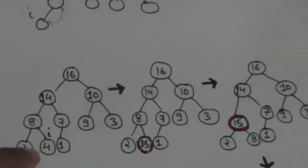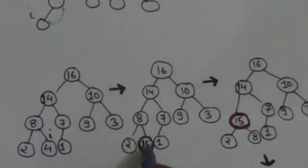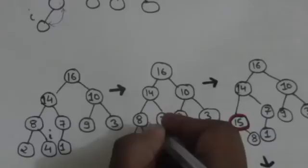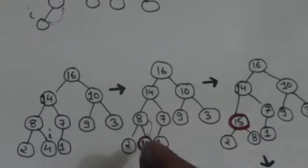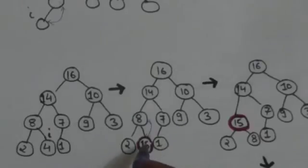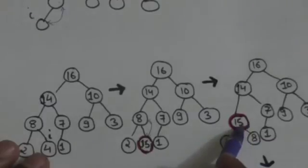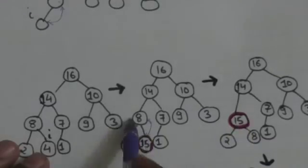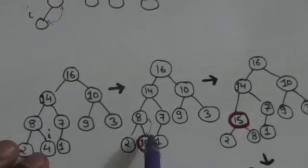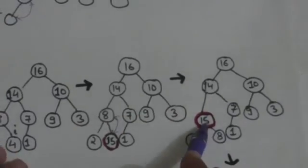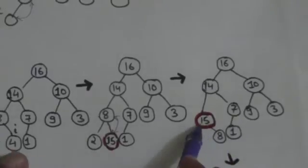After increasing the value of node i to 15, we will compare the value of node i with its parent. Here the value of node i is larger than its parent, so we will exchange node i with its parent. After exchanging, the value of the parent has changed to 15 and the value of node i has become 8.